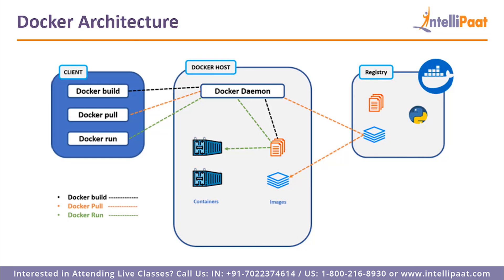First, the architecture of Docker. Docker uses a client-server architecture. The Docker client consists of Docker build, pull, and run. The client talks to the Docker daemon, which helps in building, running, and distributing Docker containers. The Docker client and daemon can be operated on the same system, or you can connect the Docker client to a remote Docker daemon. They communicate with each other using REST API over Unix sockets or a network.